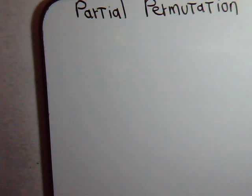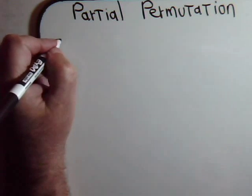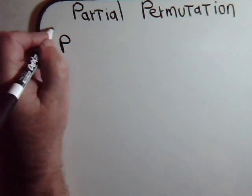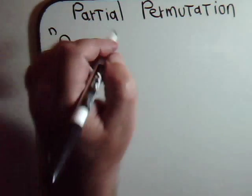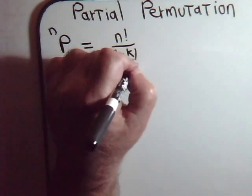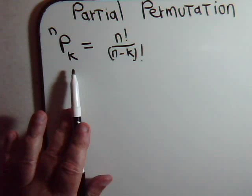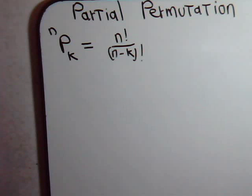Okay, in the last video we had developed this formula. This is for the situation where we have n distinct objects and we're going to select k number of them. We're asking ourselves, how many different ways can we do that where the order matters and there is no replacement? This is our formula.